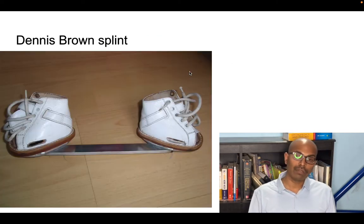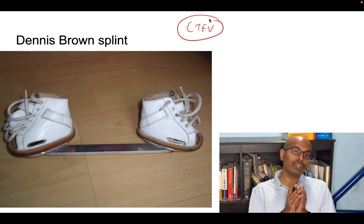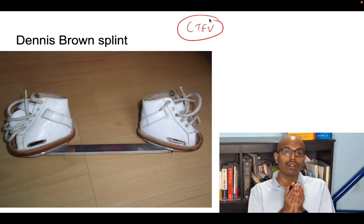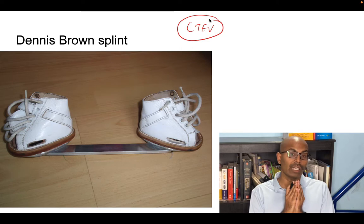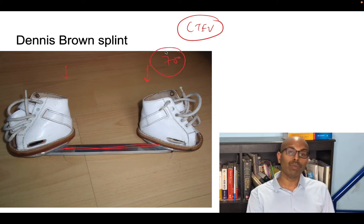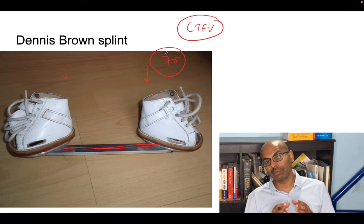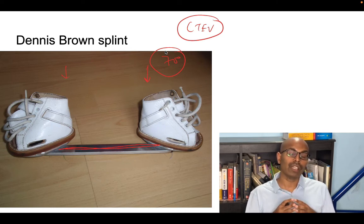Next coming to the Dennis Brown splint. All of us know this is used in CTEV, congenital talipes equinovarus or club foot cases. Once you finish your treatment - casting and manipulation, soft tissue release or osteotomy - then to maintain the position of the foot, you have to use the Dennis Brown splint for a further two years. In the initial six months to one year, use it 24 hours then at night time only. There's a bar connecting between these two shoes with an external rotation of up to 70 degrees. This maintains the position of the foot in the corrected position. This is Dennis Brown splint, frequently used after correction is obtained in club foot or congenital talipes equinovarus.